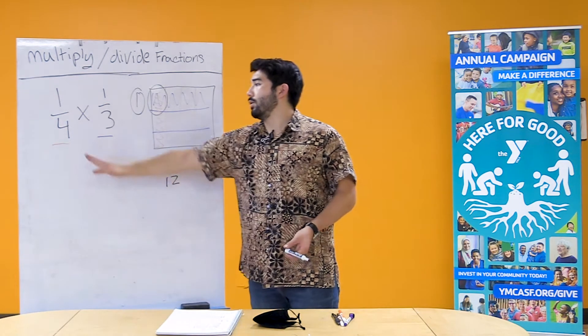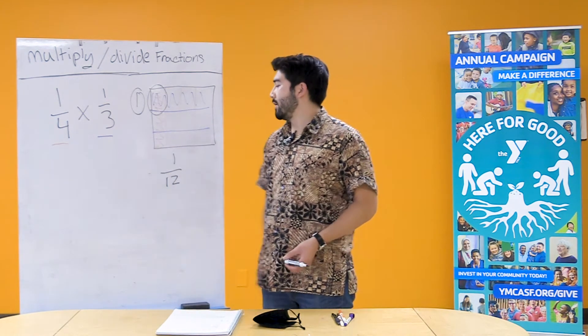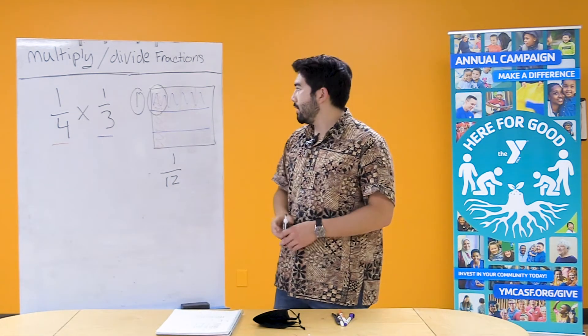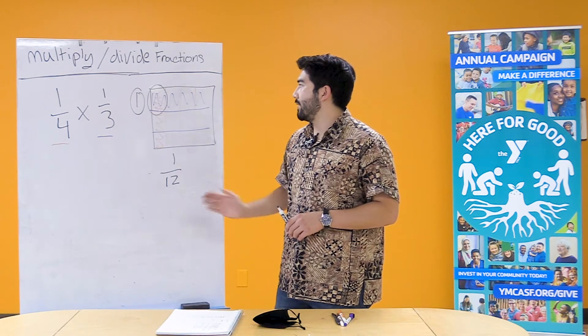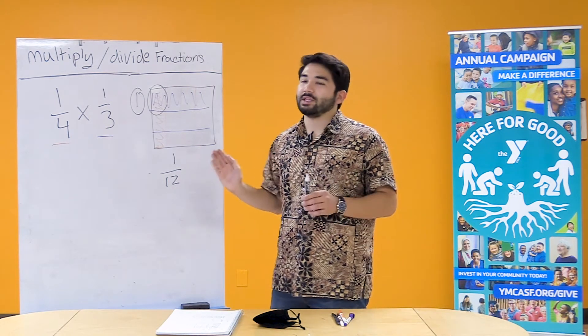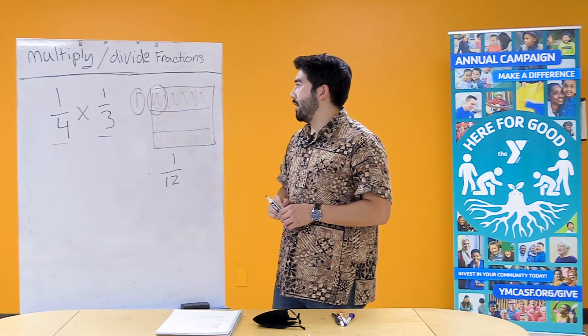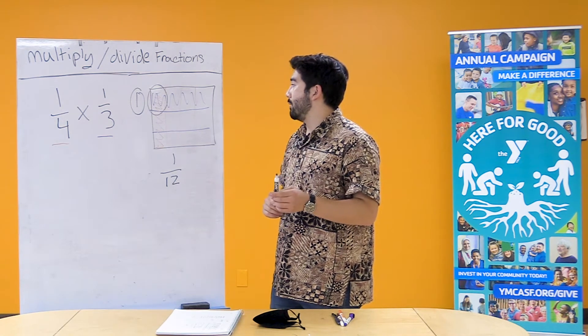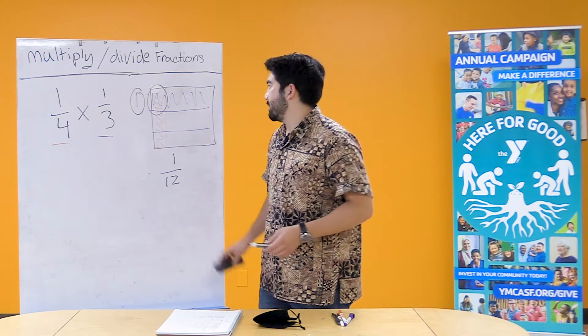Okay, so 1/4 times 1/3 is going to equal 1/12. So yeah, that's how you do with the diagram and you're gonna have to trust me this is the correct answer. I can actually prove it to you when we go on and solve the same problem through arithmetic.